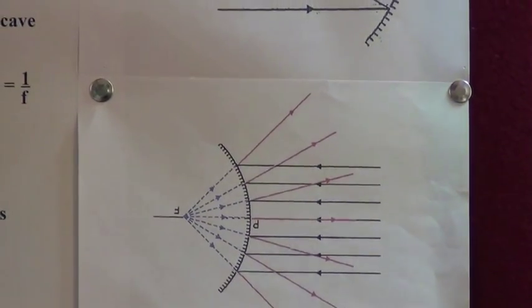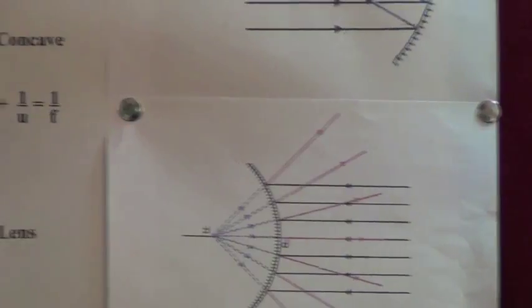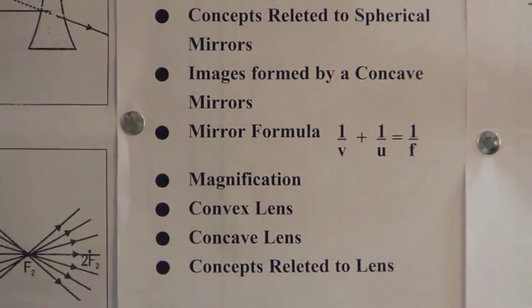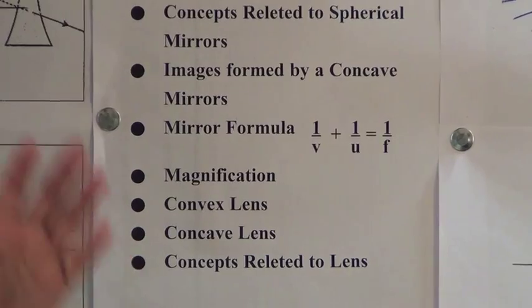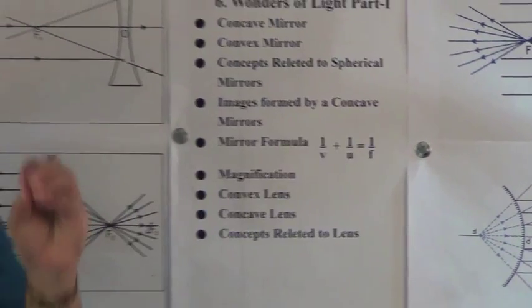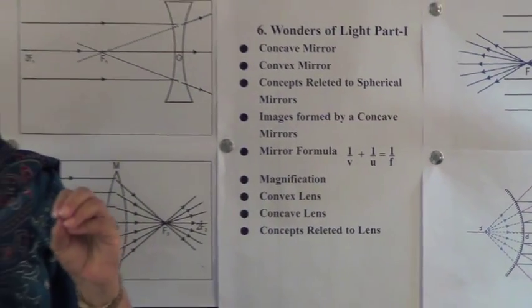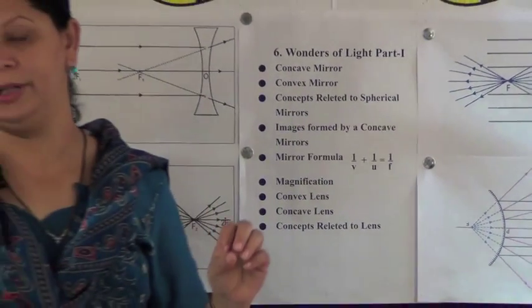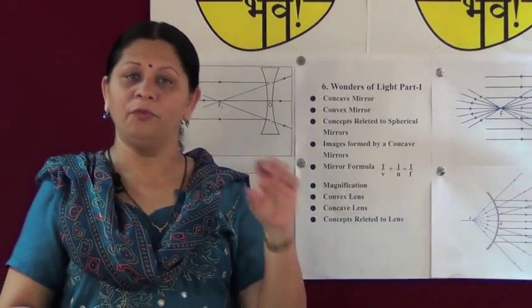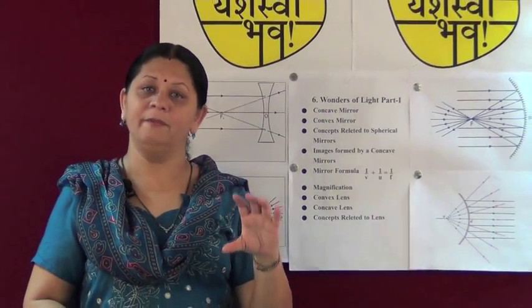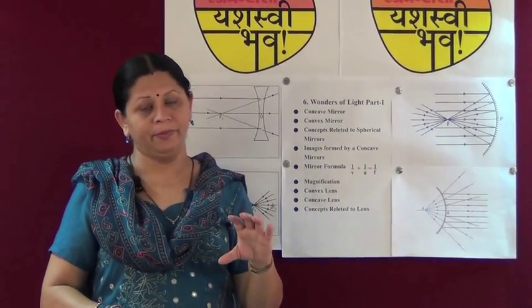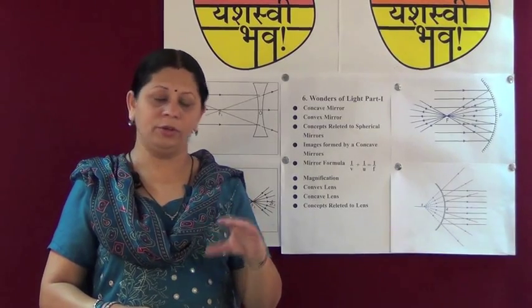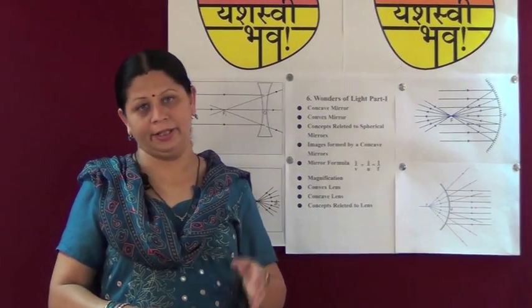Now, what are the images formed by a concave mirror? The images formed by a concave mirror depend on the distance of the object from the concave mirror. The table given in our book is provided in the article — you can refer to the article.